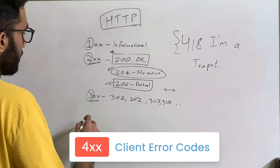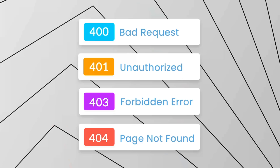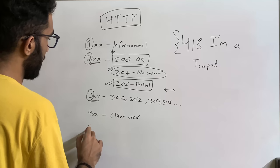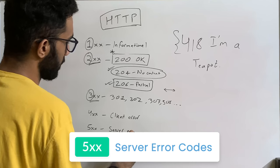Then we have the 400 range, which covers client errors — that is, the client did something bad, whether it's unauthorized, forbidden, or not allowed. And then we have the 500 range, which is server errors, meaning the server messed up — crashed, down, or whatever.